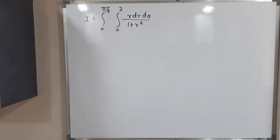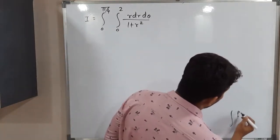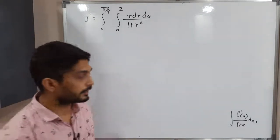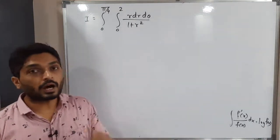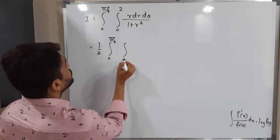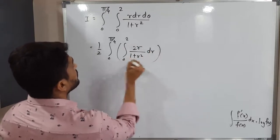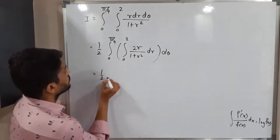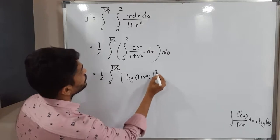Now let us solve this integration. We cannot solve it directly, so we use the formula: the integral of f′(x) / f(x) dx equals log f(x). The derivative of the denominator (1 + r²) is 2r, but we only have r in the numerator, so we multiply and divide by 2. This gives (1/2) times the integral from 0 to π/4, integral from 0 to 2 of 2r / (1 + r²) dr dθ. Now the derivative of the denominator appears at the numerator, so we can apply the log formula.